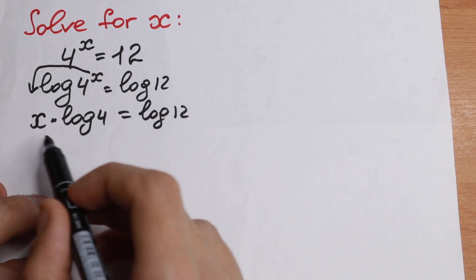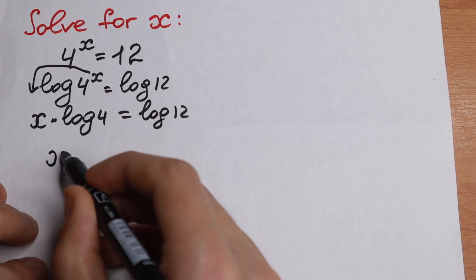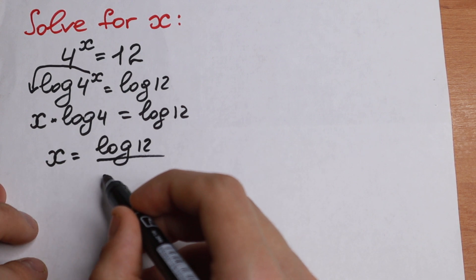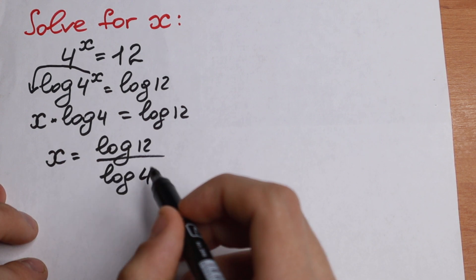Let's divide both sides by log 4 and we will have only our x. So x equals log 12 divided by log 4. And this will be our answer.